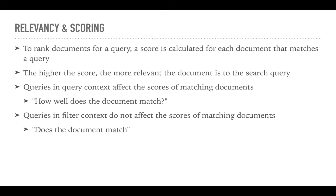Elasticsearch calculates a score for each document that matches a given query and ranks the documents according to the score. The higher the score, the more relevant the document is to the search query. When searching, there are two different contexts where queries can be applied: query context and filter context.